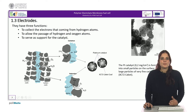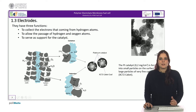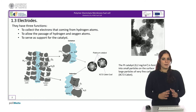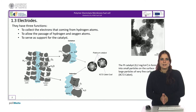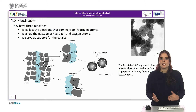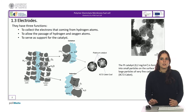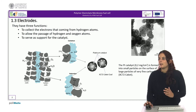Additionally, the catalyst must be right between the electrodes and the membrane so that when the hydrogen molecule arrives at the catalyst, the electrons leave on one side and the protons on the other. For this reason, another function of the electrodes is to support the catalyst.